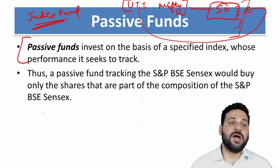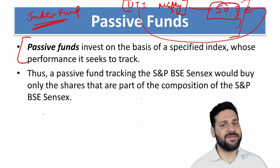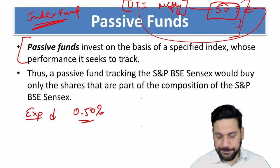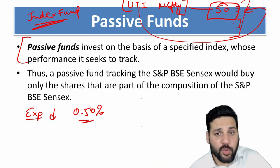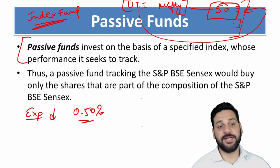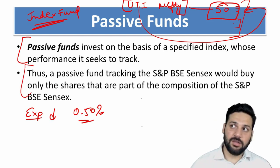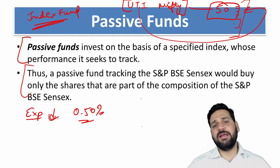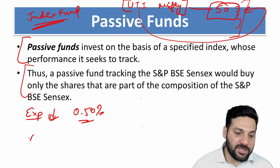Because not many people are involved and the fund manager is just tracking the Nifty, the expense ratio is normally very low — normally less than 0.5 percent. In case of actively managed funds, it is 1 to 1.5 percent, and in some cases more than 2 percent, even in direct funds. For a passive fund, the expense ratio is really low, and the investor expects that his return should be equal to market returns.